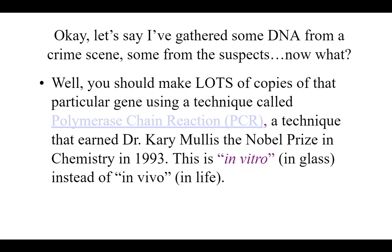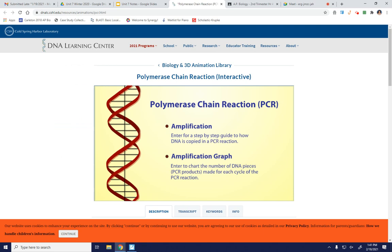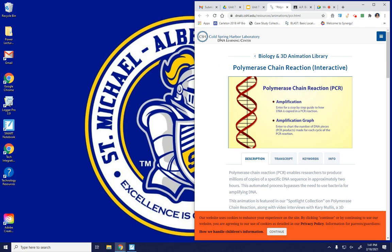We're not cloning an entire organism — cloning is basically making an identical copy of something. Here we're making an identical copy of a certain stretch of DNA. I'm going to show you a little animation to see how this works, and we'll go through and highlight a couple of the main steps.